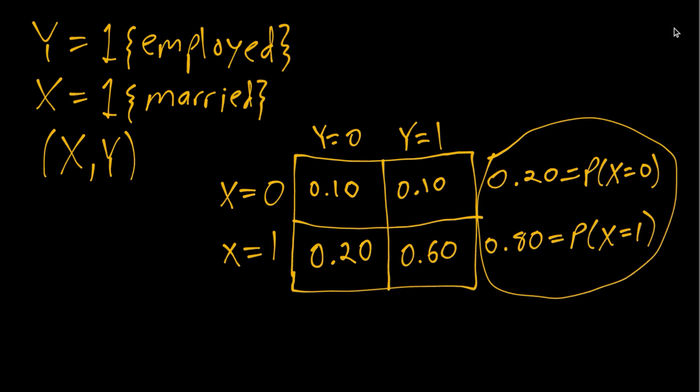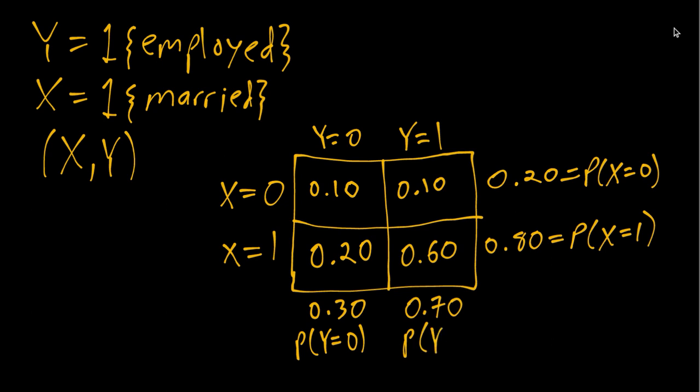Similarly, if we are interested in the marginal distribution of Y, or the unconditional distribution of Y, we can do the same thing but summing across each column. So here we would get 0.30 as the probability that Y equals 0 in the population, and 70 percent for the other option.